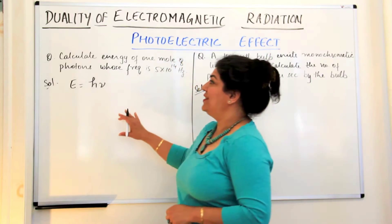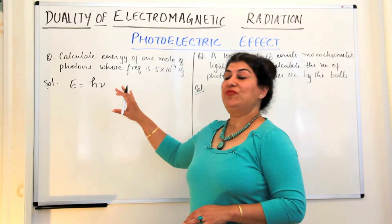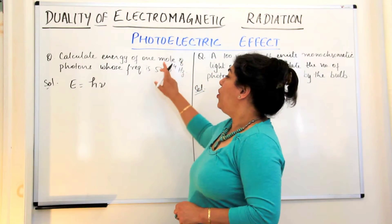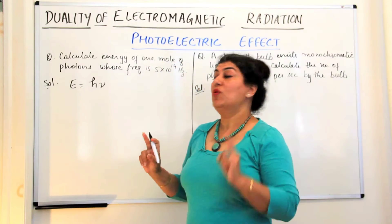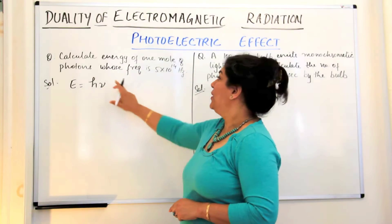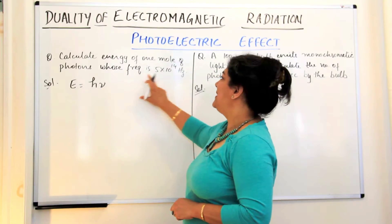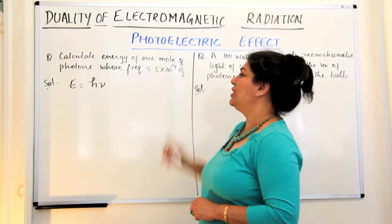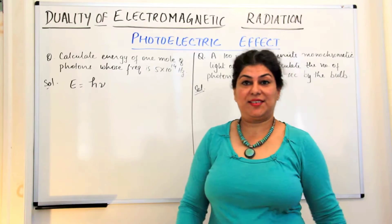The first question is that you have to calculate the energy of one mole of photons whose frequency is 5 into 10 to the power 14 Hertz.